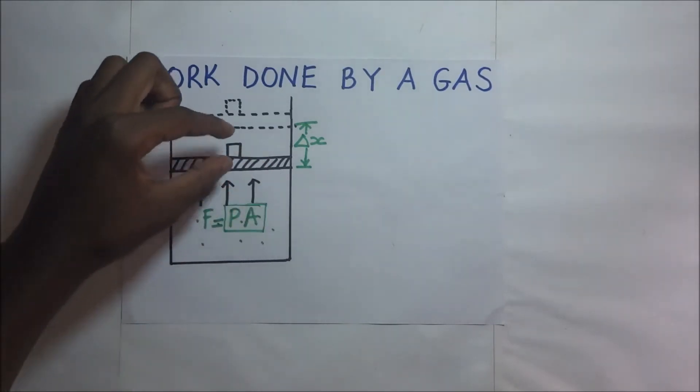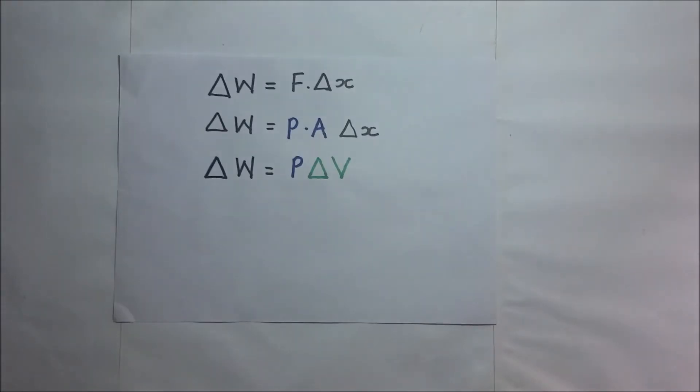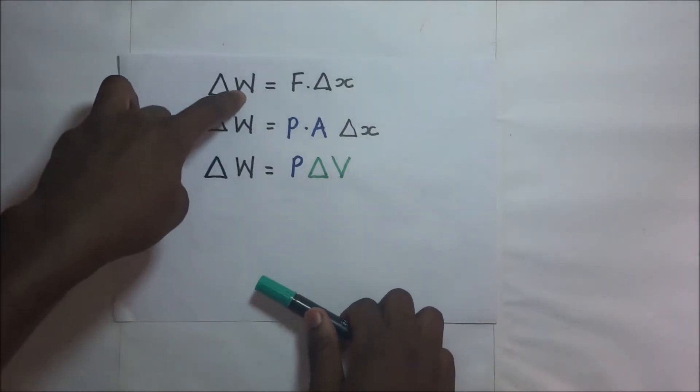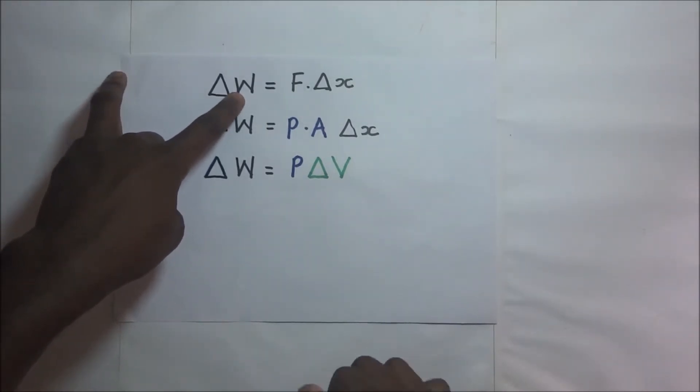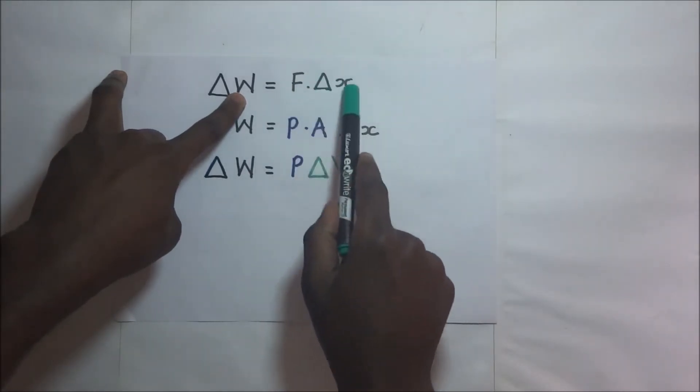So how do we get the expression for this work? We know that the formula for work is given by force times distance. In this case, that small change in work that is happening as a result of that force is given by force times that small change in distance.